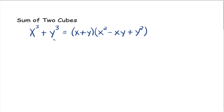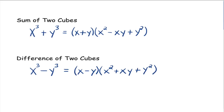Now x and y are just variables here — they really could be anything. The other one is the difference of two cubes, where you have something cubed minus something else cubed, and it factors into x minus y times x squared plus xy plus y squared.